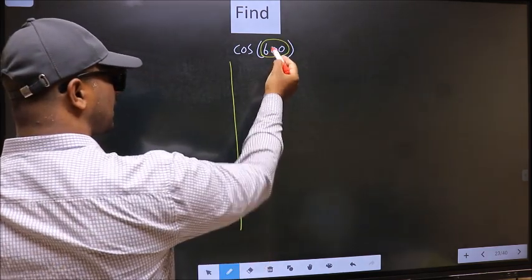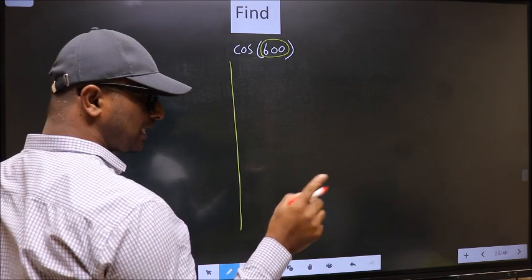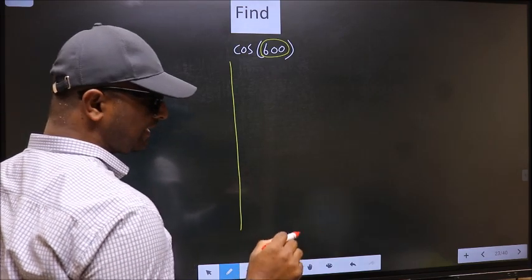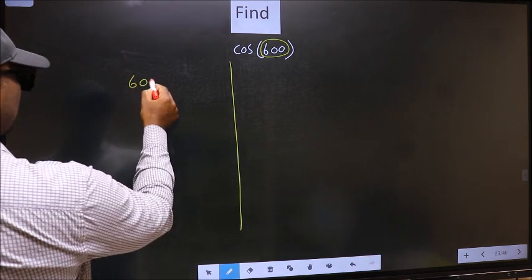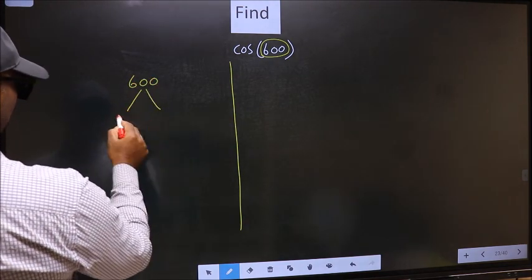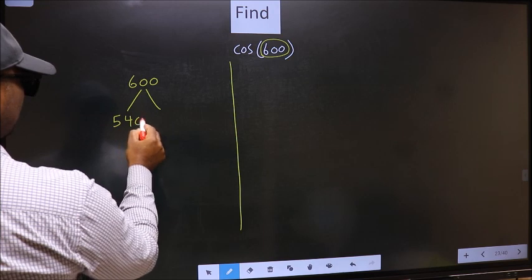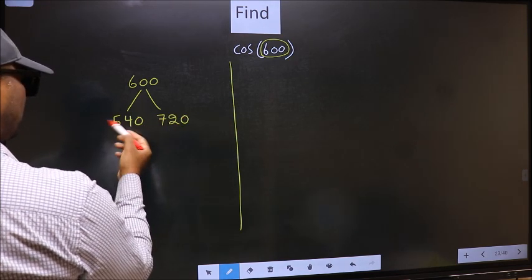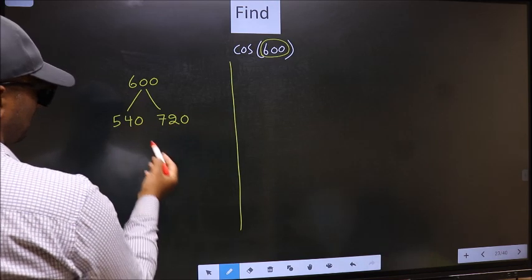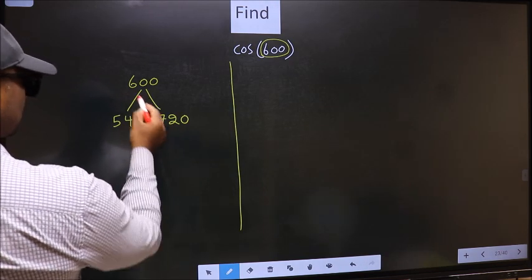600 lies between which two multiples of 180. What I mean is, 600 lies between 540 and 720. This is 180 into 3 and this is 180 into 4.